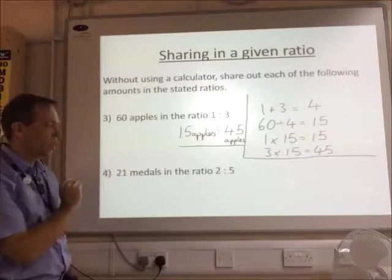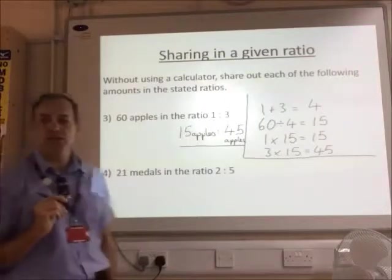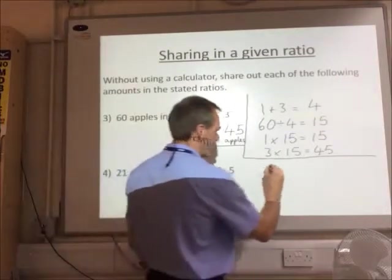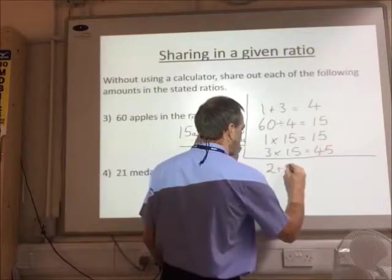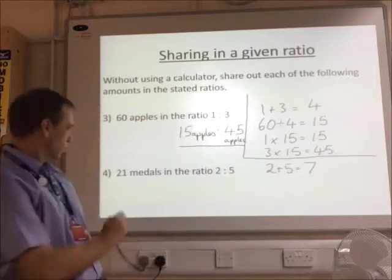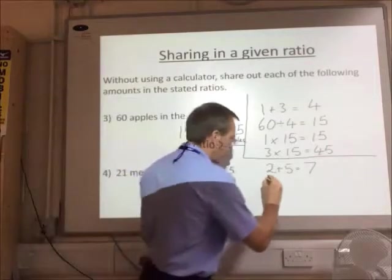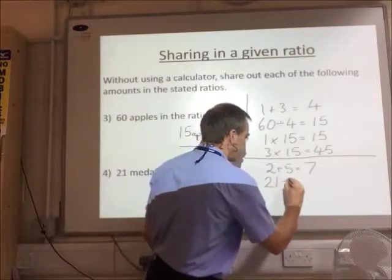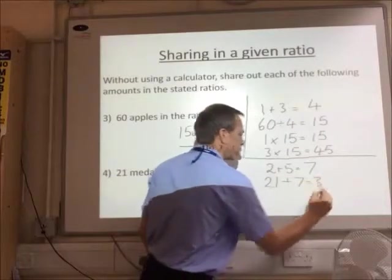And the final question we've got here, 21 medals in the ratio 2 to 5. Same process. 2 plus 5 equals 7. Divide, 21 divided by 7 equals 3.